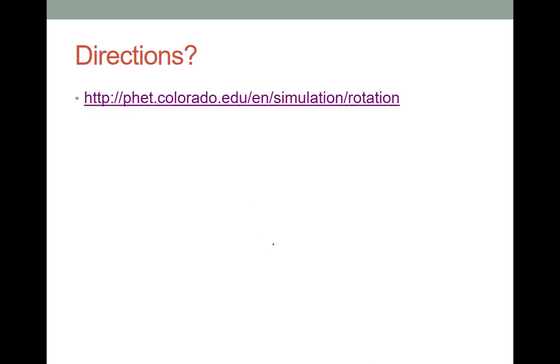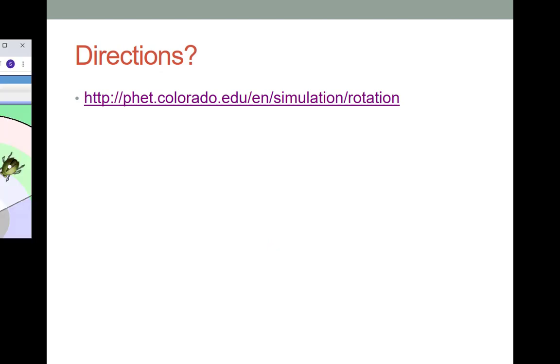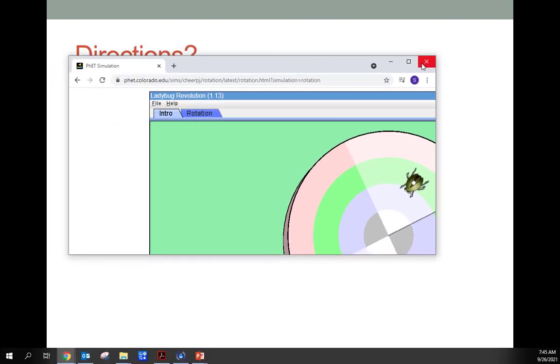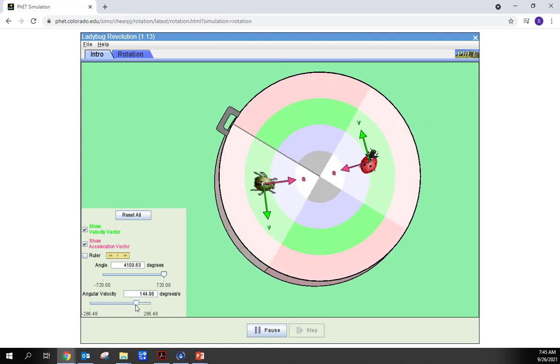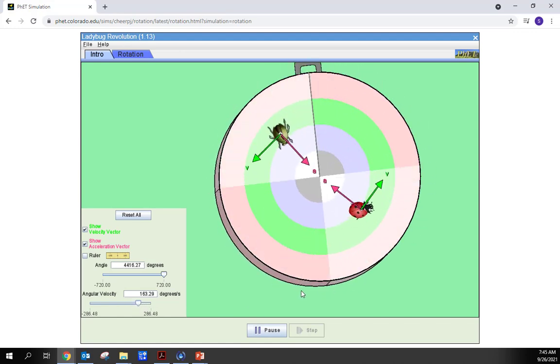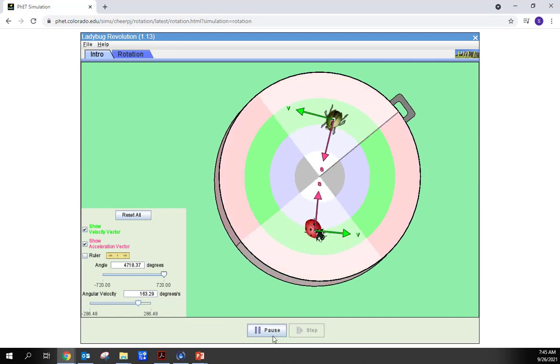What are the directions for the acceleration and the velocity when something is undergoing uniform circular motion? To answer that question, we're going to look at this simulation. In this simulation, I have a ladybug and a green beetle sitting on a turntable. And if I cause the turntable to turn, here we can see the turntable is going counterclockwise.